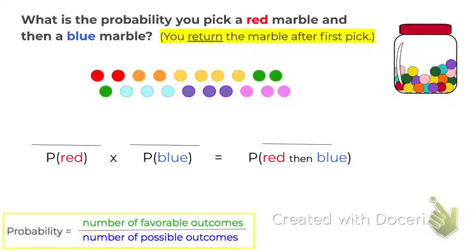Here we're going to practice finding the probability of more than one thing happening. If we have this jar of marbles, this question is asking us to find the probability that you pick a red marble and then you pick a blue marble. It's saying that we're going to return the marble after our first pick. So let's first find the probability of picking a red marble on our first pick.